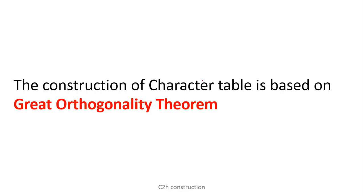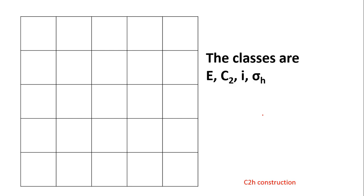In today's lecture we are going to discuss the construction of a character table for the C2H point group based on the Great Orthogonality Theorem. In the C2H point group there are four classes: E, C2, I, and sigma H.